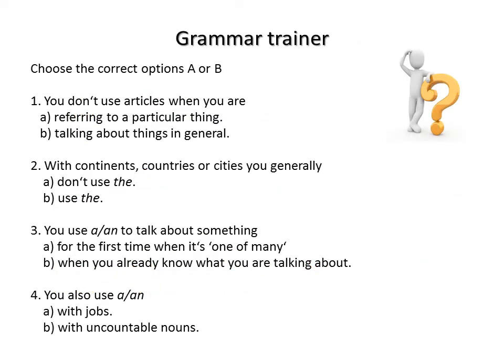Now let's do the grammar trainer and revise the use of articles. Read the following sentences carefully and choose the correct options, A or B. Question 1: You don't use articles when you are — A: referring to a particular thing, or B: talking about things in general. The correct option is B. We don't use articles when we are talking about things in general.